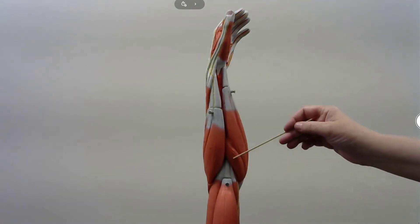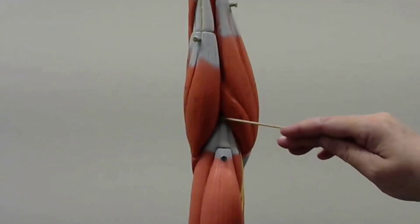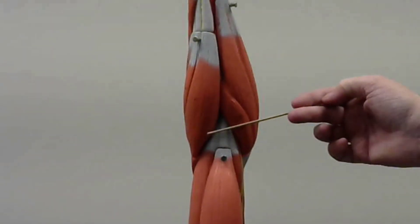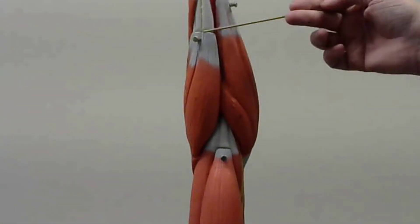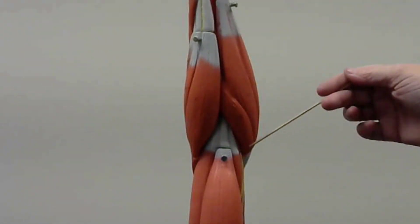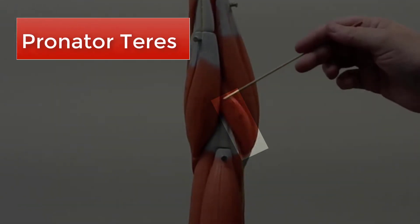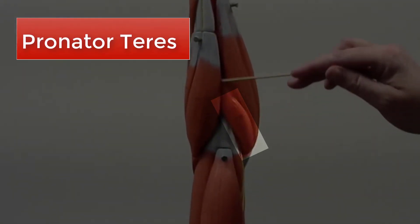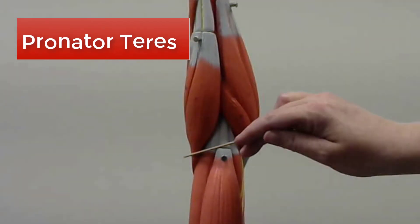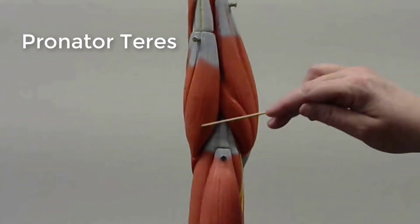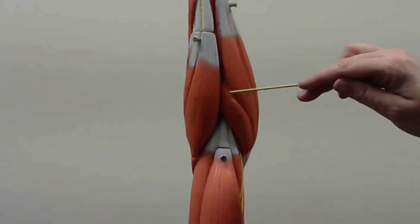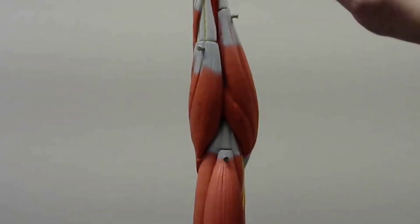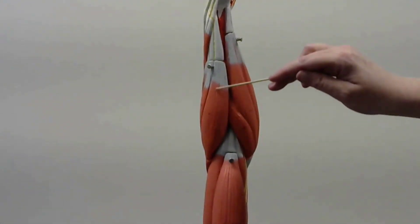This muscle here—this is the antecubital area, so this is the front part of the elbow, just to give you your orientation. This is your thumb side, so this is your pronator teres. And you may remember from before, this is our brachioradialis. So this is actually a good view to see both of those muscles—the pronator teres on this side and then the brachioradialis on this side.